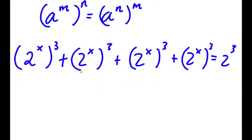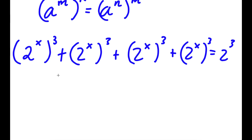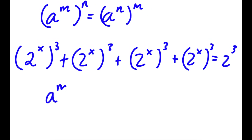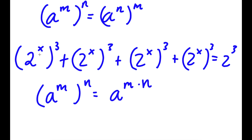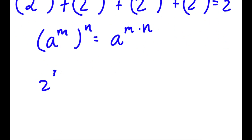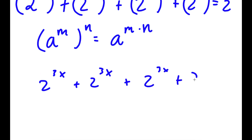Now, this is the same thing as a to the power of m times n. So now I have 2 to the power of 3x plus 2 to the power of 3x plus 2 to the power of 3x plus 2 to the power of 3x is equal to 2 to the power of 3.